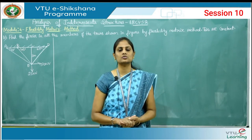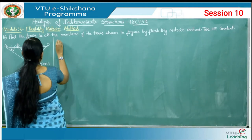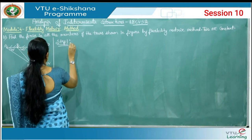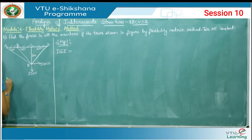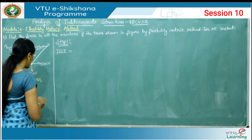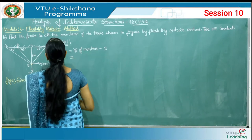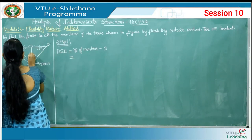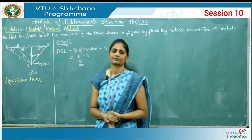Good morning everyone, welcome back to analysis of indeterminate structures. In today's session, let us consider one more problem on trusses. The very first step is to find the degree of static indeterminacy. If you observe the given truss structure, all the members meet at one single joint called E. Therefore we use the formula: number of members minus 2. Counting the members, we have 1, 2, 3, and 4, so it is 4 minus 2, giving a degree of static indeterminacy of 2.